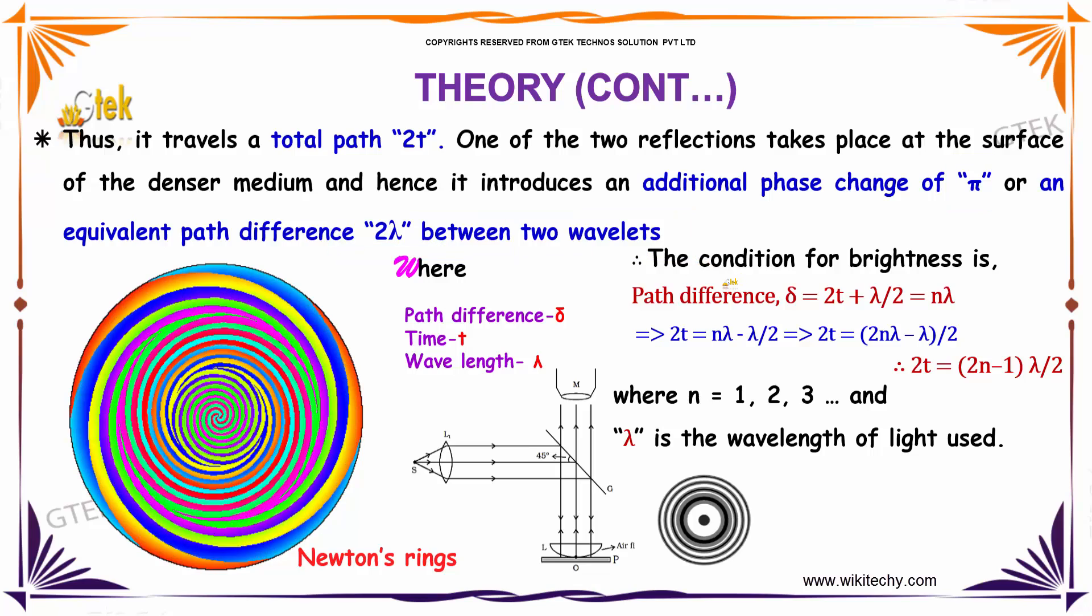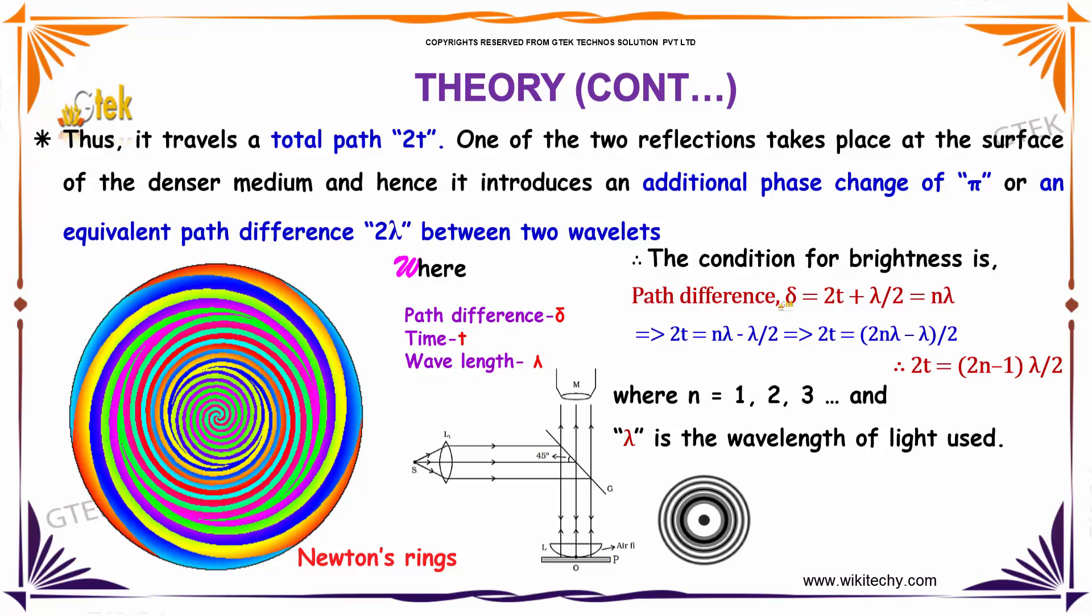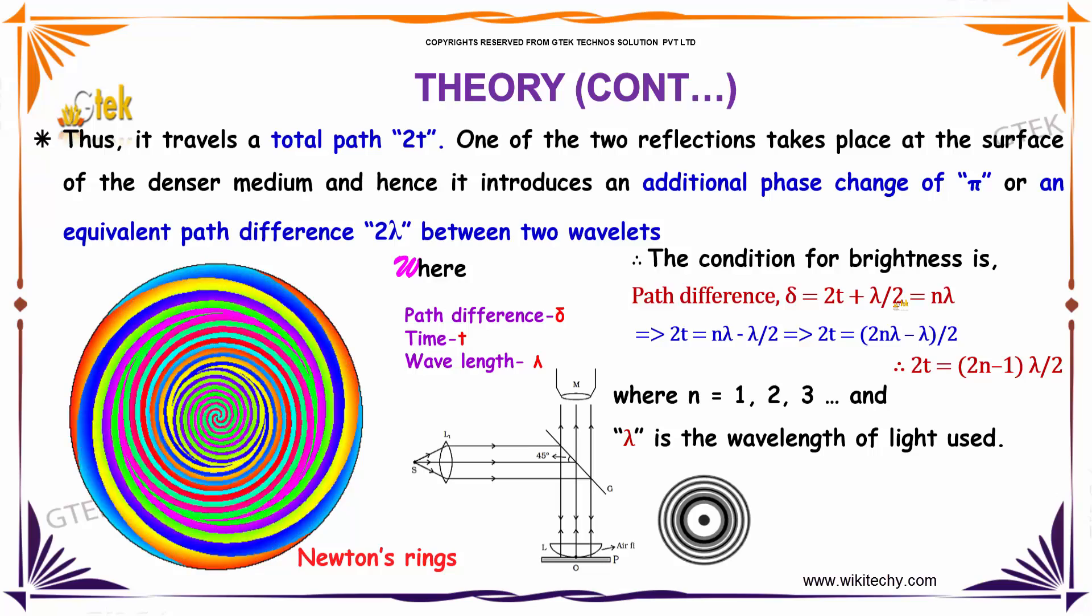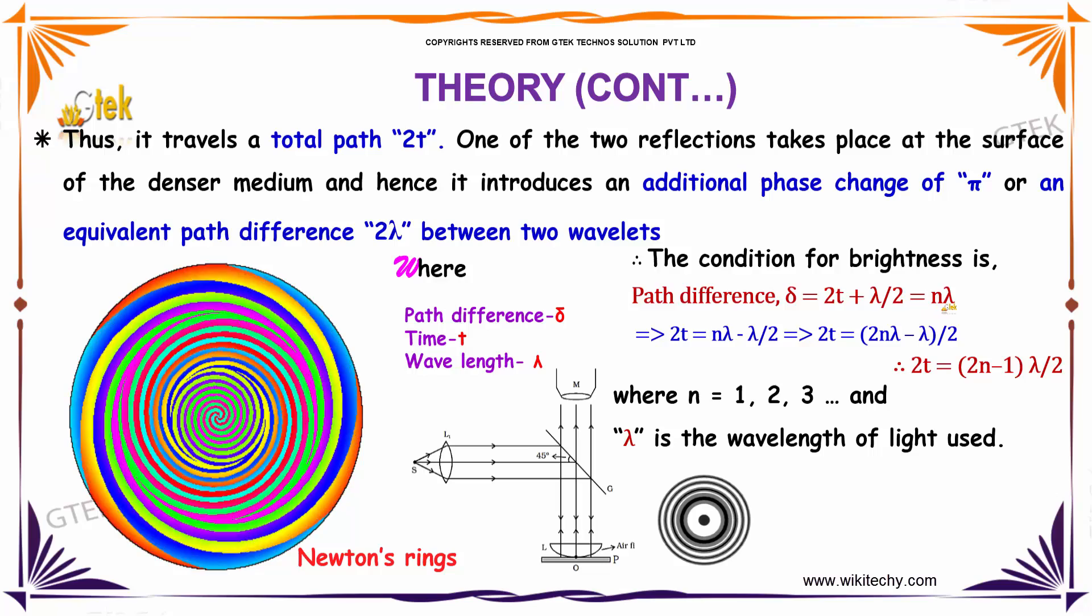The condition for brightness is: path difference δ = 2T + λ/2 which is equal to nλ.